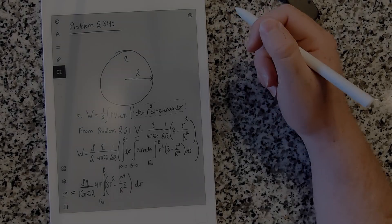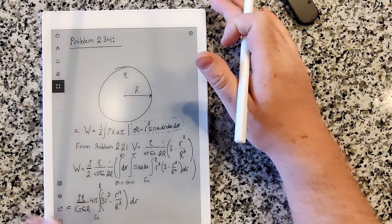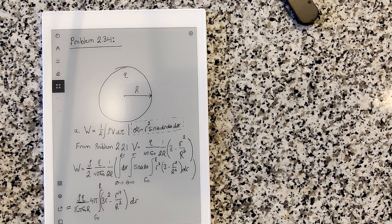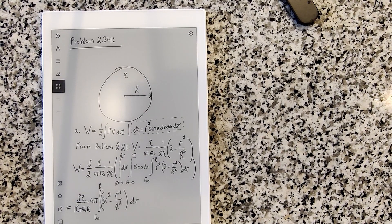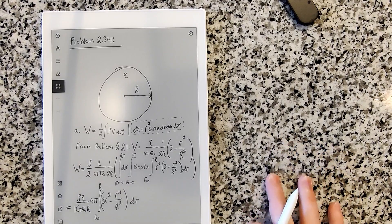Hello everyone, welcome to David Griffiths' Electrodynamics Problem 2.34. This problem says to find the energy stored in a uniformly charged solid sphere of radius R and charge Q. It tells us to do it three different ways, so we have three different parts here.